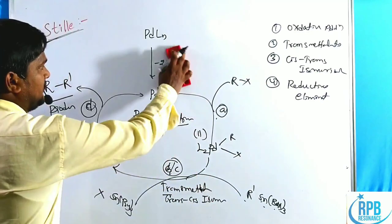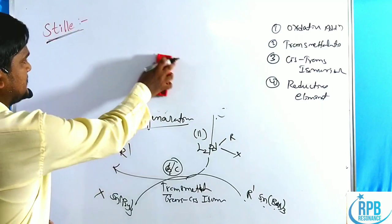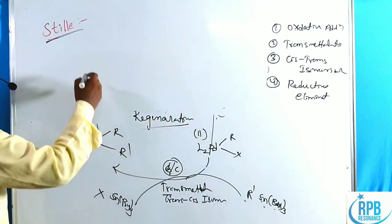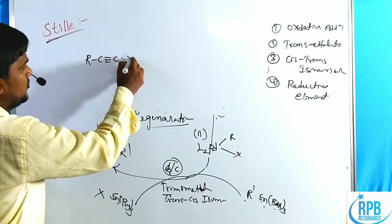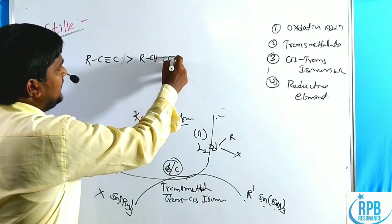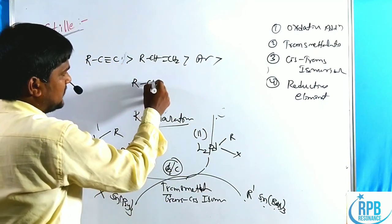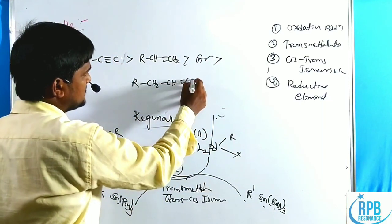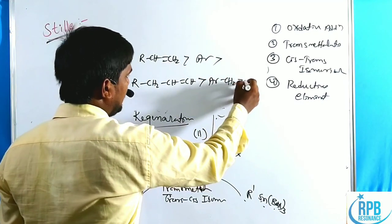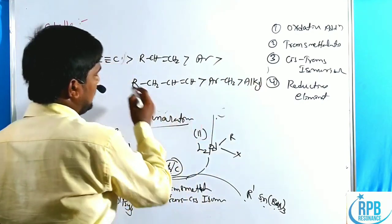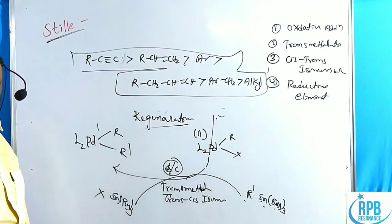The transmetalation reactivity order is: alkynes > alkenes > aromatic compounds > allyl groups (R-CH₂-CH=CH-) > benzyl groups > alkyl groups. This is the transmetalation order for the Stille cross-coupling reaction.